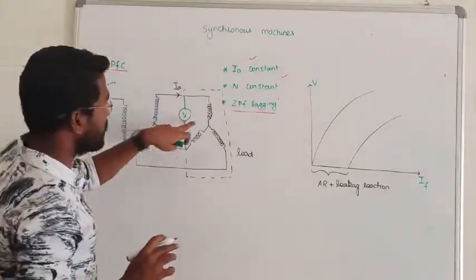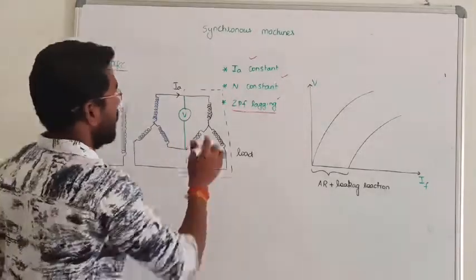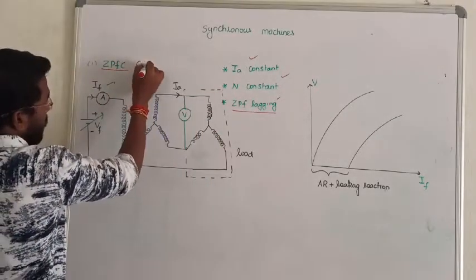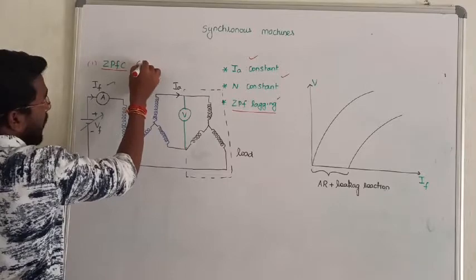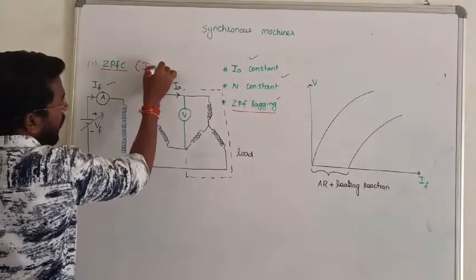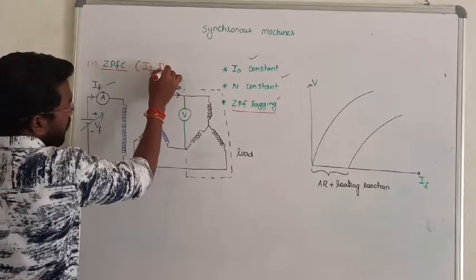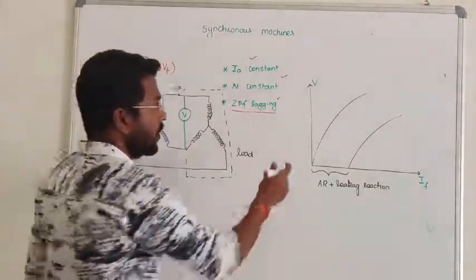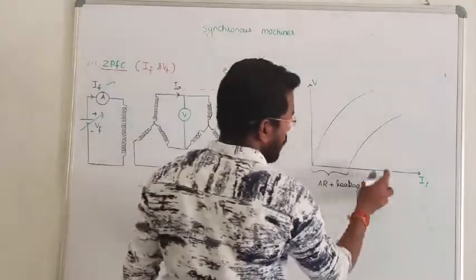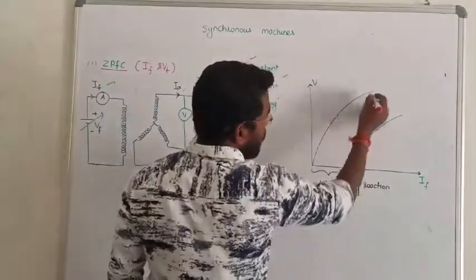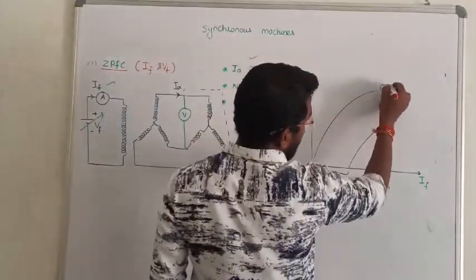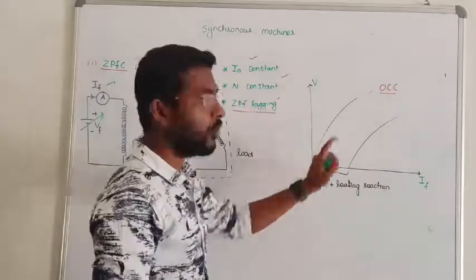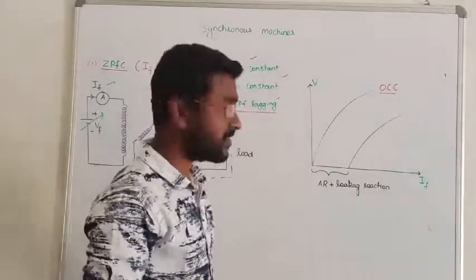We have field current versus terminal voltage — that is called zero power factor characteristics. The characteristics vary with field current versus terminal voltage. The first characteristic we consider is the open circuit characteristics.